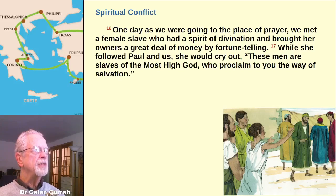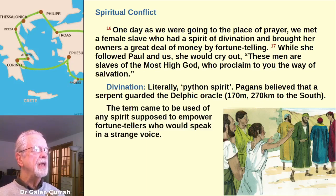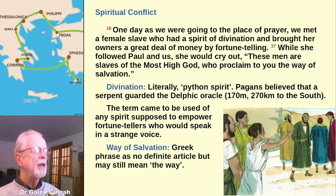Read verses 16 and 17. Explain what is meant by divination. The Greek term literally reads 'a python spirit,' for the pagans believed that a serpent guarded the Delphic Oracle, located about 270 kilometers to the south. The term came to be used of any spirit supposed to empower fortune-tellers who might speak in a strange voice. The young woman was shouting, 'These men are slaves of the Most High God, who proclaim to you the way of salvation.' Both pagans and Jews used the term 'Most High God' for the Creator. Although the Greek phrase 'way of salvation' does not have the article 'the' before it, it still seems to mean the way of salvation.